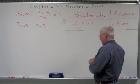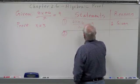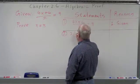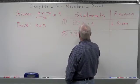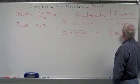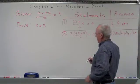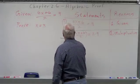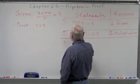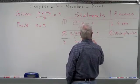Using those properties, statement number two — the best thing to do is multiply by 2, so I'm going to multiply everything by 2. The reason is the Multiplication Property. Statement number three: that division goes away, giving us 4x plus 6 equals 18.